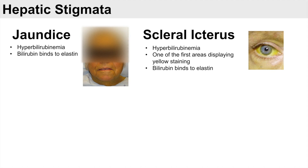A related sign of liver disease is scleral icterus. Scleral icterus is essentially jaundice of the sclera, or the whites of your eyes — they become yellow. This is again due to hyperbilirubinemia; there is elastin in the sclera, and bilirubin binds to it. The sclera is actually one of the first areas to display yellow staining and to signal an issue with the liver.